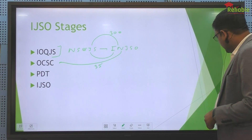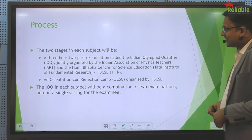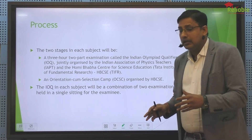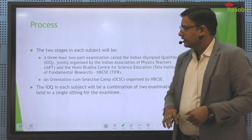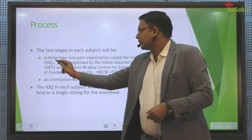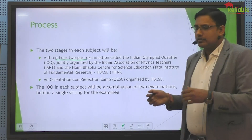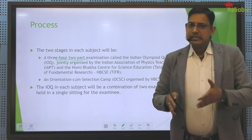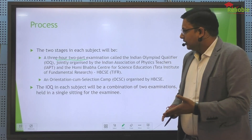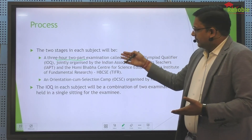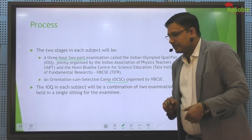So who has an exam for IJSO? They have said that if we club both papers, the combined IOQJS will be three hours long, with two parts: the first part will be at NSEJS level for one hour, and the second part will be at IJSO level for two hours. On that basis, they will place students in the OCSC camp.